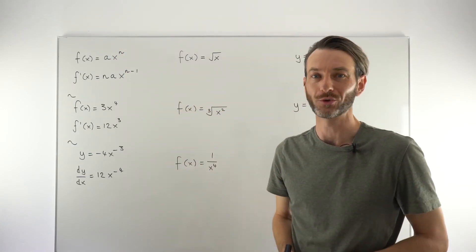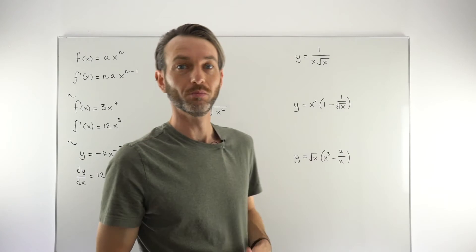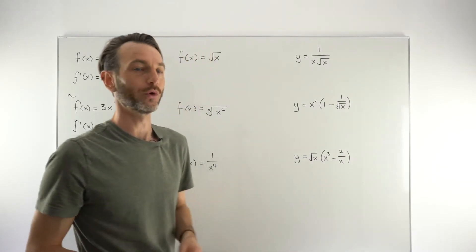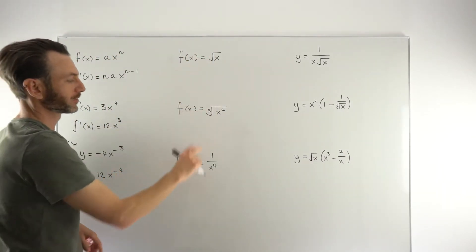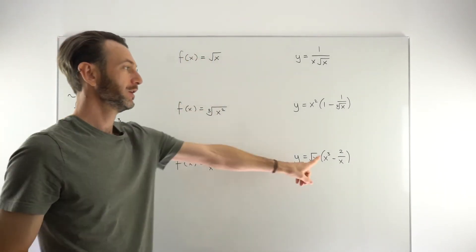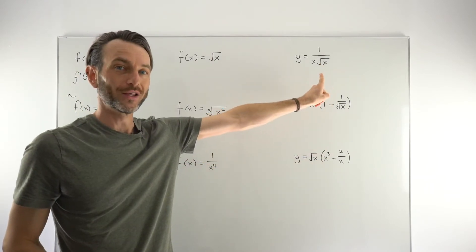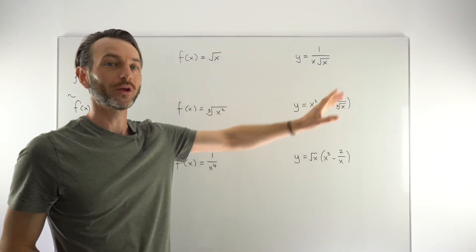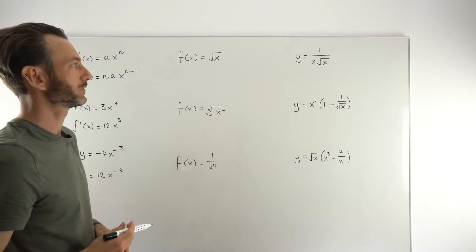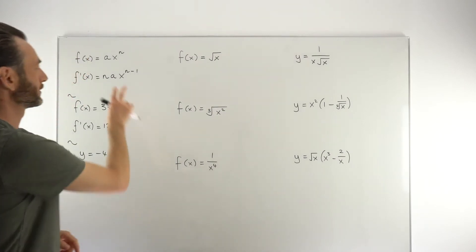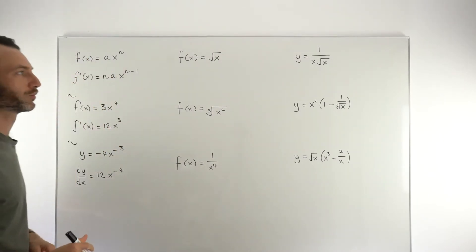Those are two quick examples of using the power rule when terms are in the ideal AX to the power of N format. Sometimes you will get those, and those are fine. When you're starting out, that's mostly what your functions are going to look like. But pretty soon they're going to start to turn into these monstrous-looking things which are not in the correct format.